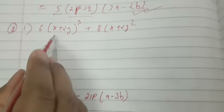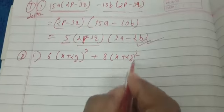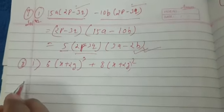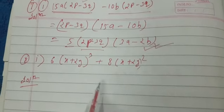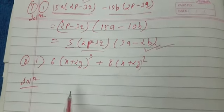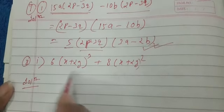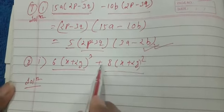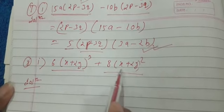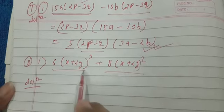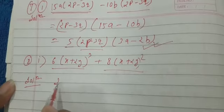Question 8(i): 6 into (x plus 2y) whole cube plus 8 into (x plus 2y) whole square. Remember, in this exercise we are using only one method — taking a common factor out from the given expression to get the factors. Looking at the two terms, (x plus 2y)³ and (x plus 2y)² are present, so we take (x plus 2y)² as common. Also, 6 and 8 are multiples of 2, so we take 2 as common as well.